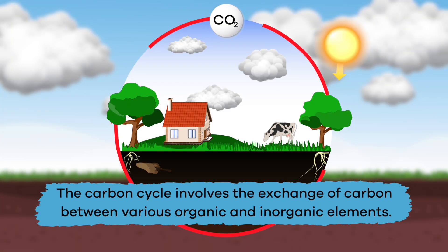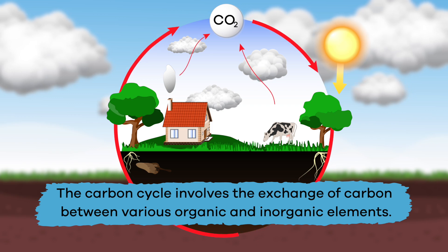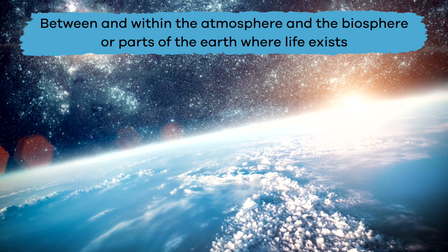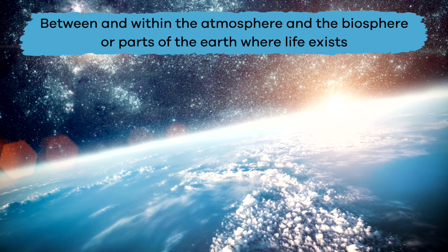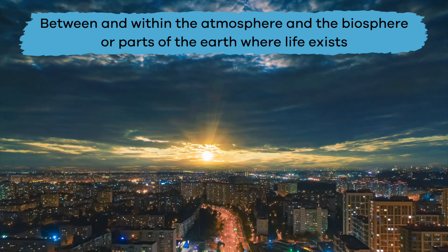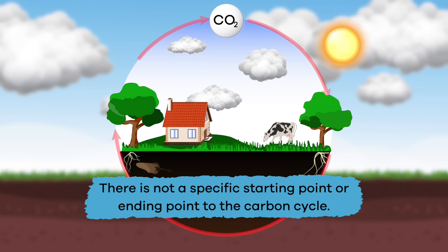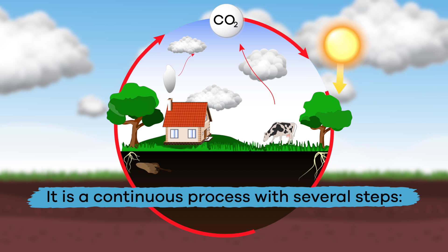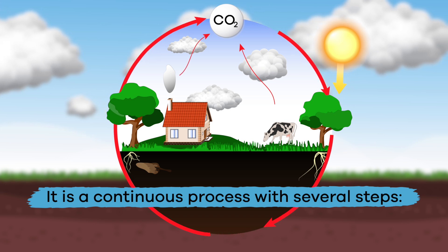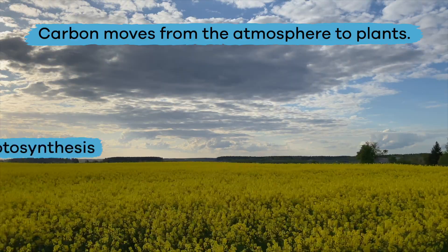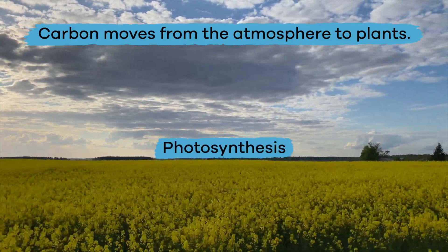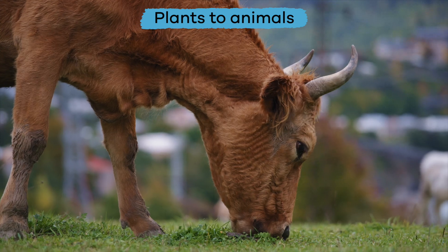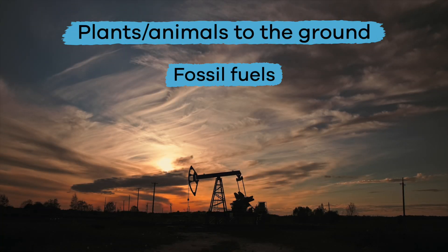Here's why: the carbon cycle involves the exchange of carbon between various organic and inorganic elements, between and within the atmosphere and the biosphere — or parts of the earth where life exists. Just like all of the earth's cycles, there is not a specific starting point or ending point to the carbon cycle. It is a continuous process with several steps.